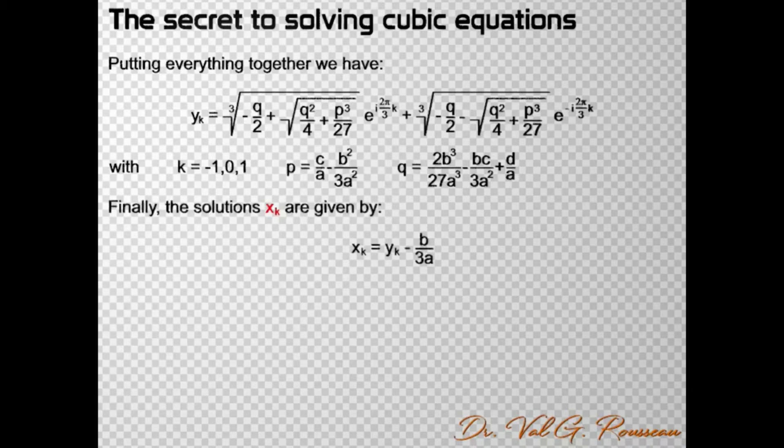Ok, so we have our three solutions. Now, it is useful to determine whether these solutions are real or not. For this purpose, we can define the so-called discriminant Δ = 4p³ + 27q².